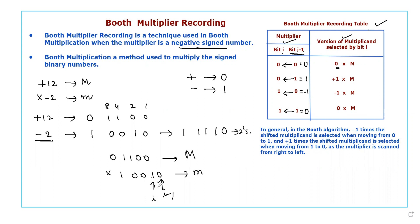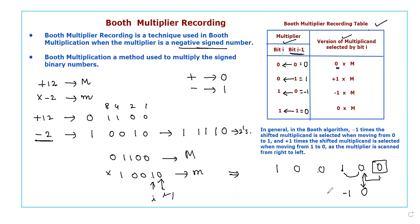Based on this table, we convert the multiplier 10010 into its recoded value. We append an extra 0 to the right (LSB position) and scan from right to left, computing differences between consecutive bits: 0 minus 0 = 0, 0 minus 1 = -1, 1 minus 0 = +1, 0 minus 0 = 0, 0 minus 1 = -1. These are the new multiplier bits used to multiply the multiplicand. This is the Booth multiplier recoding for a negative signed multiplier.